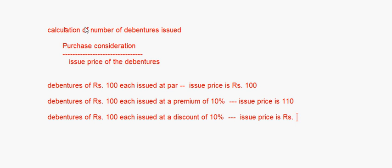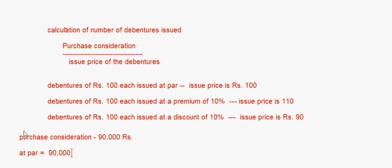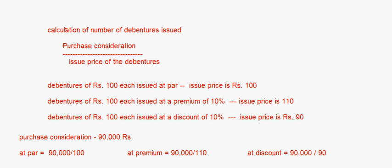Debentures of ₹100 each issued at a discount of 10% — issue price is ₹90. If the purchase consideration is ₹90,000: at par, number of debentures = 90,000 ÷ 100; at premium, = 90,000 ÷ 110; at discount, = 90,000 ÷ 90. This is how we calculate the number of debentures issued for consideration other than cash.